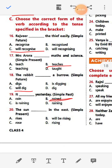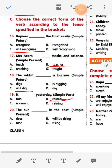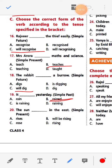Number twenty: The sun dash in the east — Simple present. Because it happens every day, as in question seventeen, the answer is 'rises' — The sun rises in the east.